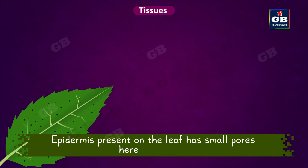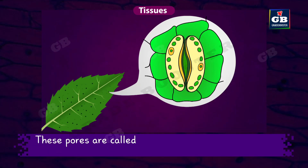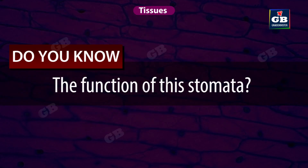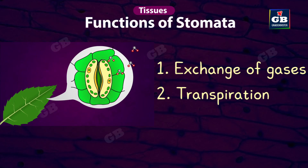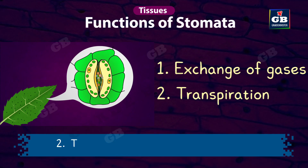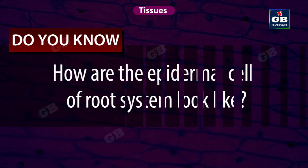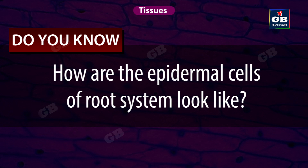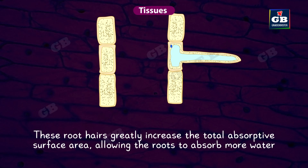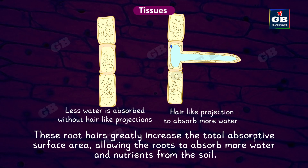The epidermis on the leaf has small pores called stomata, and each stoma is protected by a pair of kidney-shaped guard cells. Stomata have two functions: they are essential for gas exchange, and they help in the process of transpiration. The epidermal cells of roots have long hair-like structures called root hairs, which greatly increase the total absorptive surface area, allowing the roots to absorb more water and nutrients from the soil.